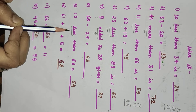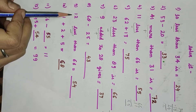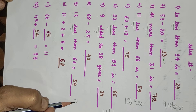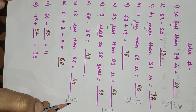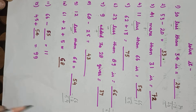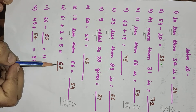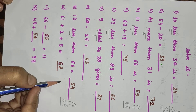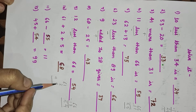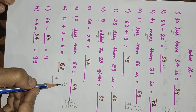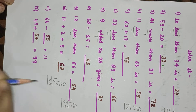12 less than 66 — again, less means minus. 66 minus 12 will be 54. 6 minus 2 will be 4, and 6 minus 1 will be 5. So the answer is 54. Next: 61 plus 2 plus 5 will be what? 1 plus 2 will be 3, 3 plus 5 will be 8, and here is 6. So the answer is 68.